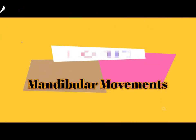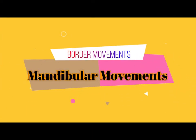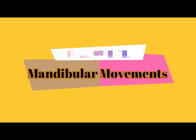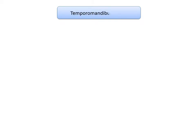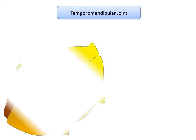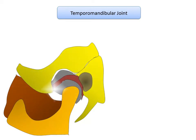Today's topic of discussion is mandibular movements. A thorough knowledge about the various movements of the mandible is essential before recording the jaw relation. Mandibular movements occur around the temporomandibular joint, which is capable of making complex movements. The maxillomandibular relationship varies every second during mandibular movements, so prior to understanding the concept of mandibular movements, let's first brush up our knowledge on the temporomandibular joint.